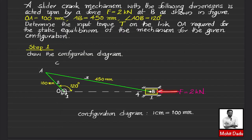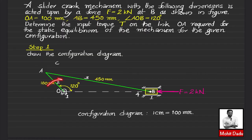The mechanism is acted upon by an external force of 2 kilonewton magnitude on the slider. This force causes the slider to move left, transmitting through the connecting rod and tending to rotate the crank in the anticlockwise direction, disturbing static equilibrium. To restore equilibrium, we must determine the input torque T on link OA required to maintain static equilibrium.